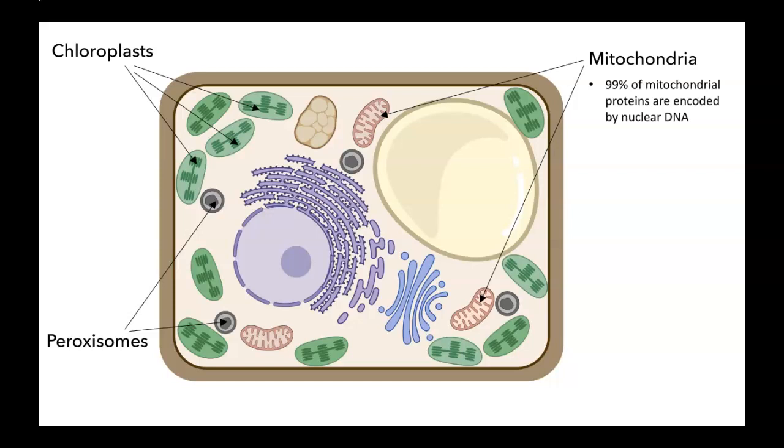What this means is when the cell transcribes those genes and the messenger RNA is brought into the cytoplasm, there's going to have to be a way to assemble those proteins and then target them to the mitochondria.